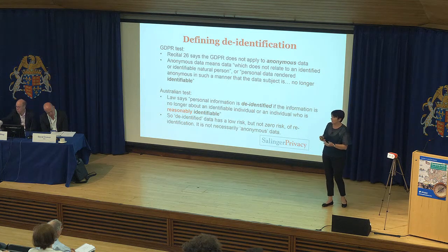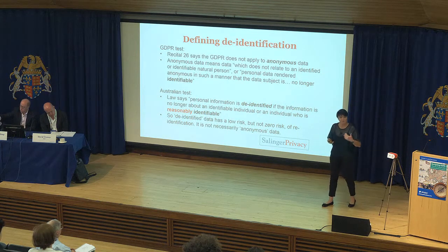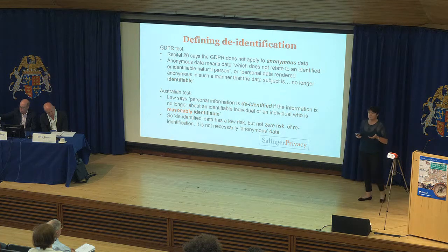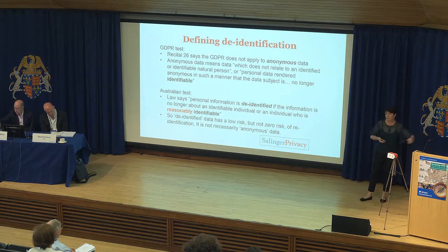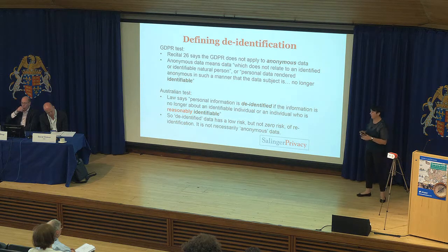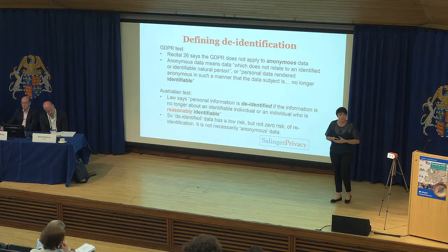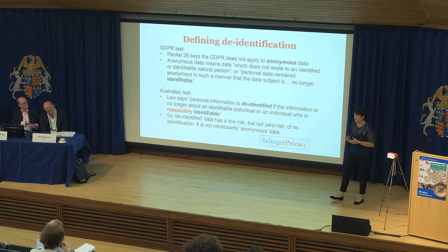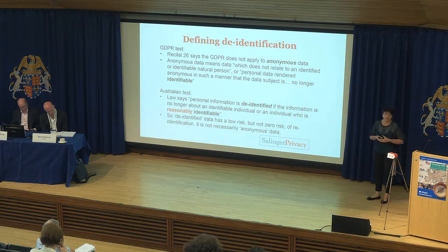So if someone could be identified, but it takes more than reasonable steps, the Australian law says that's okay — we're still not going to apply privacy law to it. My first point here is: know which law you're applying. I've obviously not covered all the different laws. Know which law you're applying and the exact definition and what it means.